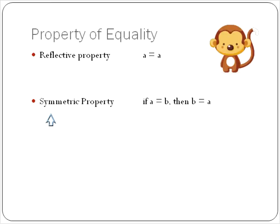The symmetric property is that if A equals B, then B also equals A. So you can switch. If you've got something on one side of the equal sign and something on the other side, you can kind of switch them, and it doesn't matter if they're on the right or the left.